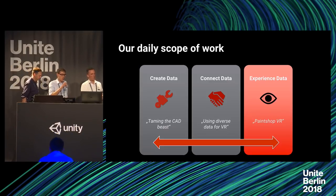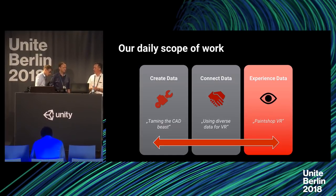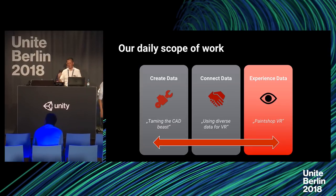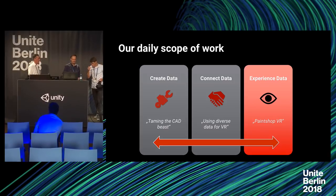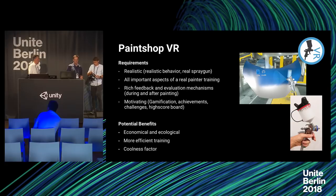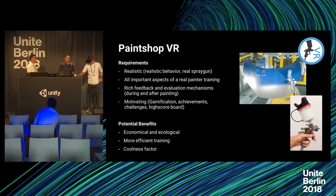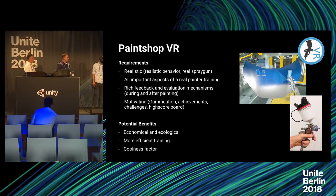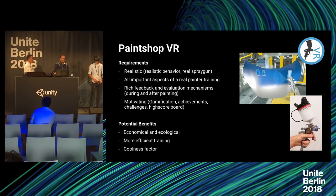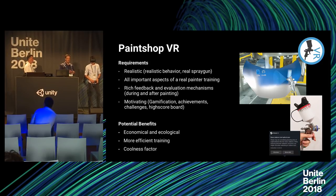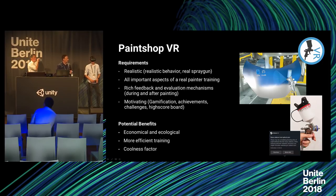We've heard about connecting and importing data — now let's share what I think is a really great experience we built for a customer. A customer approached us wanting a simulation for training painters for paint shops. The requirements were that the simulation should be very realistic — behaviorally and haptically — so what we did was hack a real spray gun and put a Vive controller and sensors with an Arduino inside it, which passes the trigger pressure data to the Vive tracker and then to Unity, giving a really realistic feeling when the person is spraying a work part.